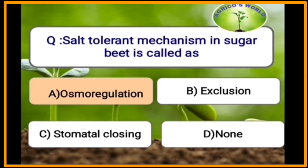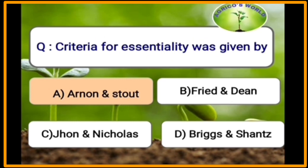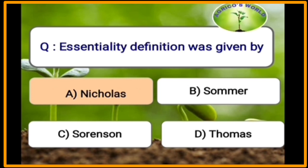The salt-tolerant mechanism in sugar beet is called osmoregulation. The criteria for essentiality was given by Arnon and Stout, and later refined by Arnon. The A-value was given by Fried and Dean for the estimation of phosphorus and sulfur. The essentiality definition was given by Nicholas.